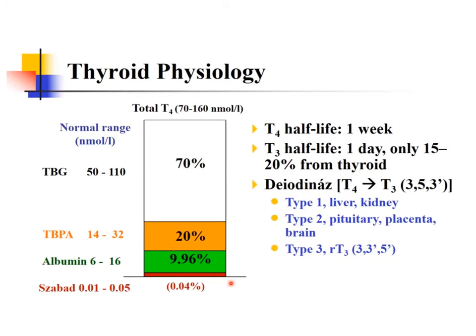The free T4 form is extremely small — the total T4 is orders of magnitude higher. Measuring this free form was technically difficult for decades; today it's straightforward and can be ordered directly. In the past, clinicians used indirect methods like the free T4 index and resin uptake to estimate it, but these are now obsolete. You can simply order the free form directly.